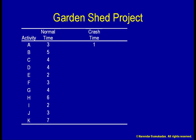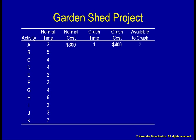But I also recognize that nothing comes for free. Crashing activity A is going to cost more than conducting it at a normal pace. The normal cost for activity A is $300, but crashing it will raise the cost to a crash cost of $400. That means I can gain 2 days by spending $100, which works out to $50 per day of crashing.